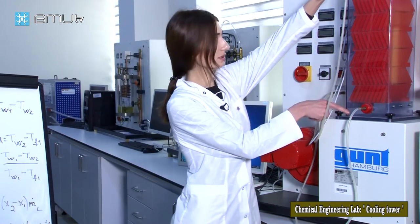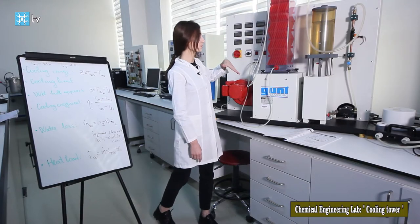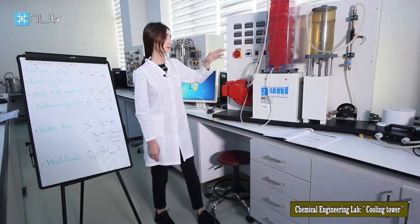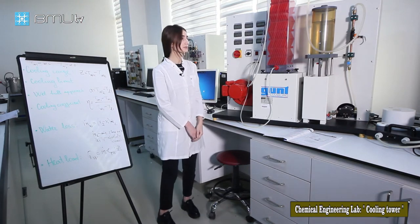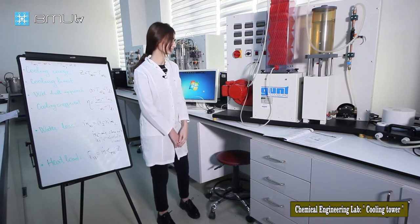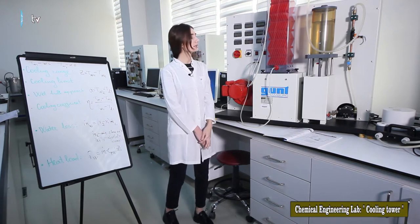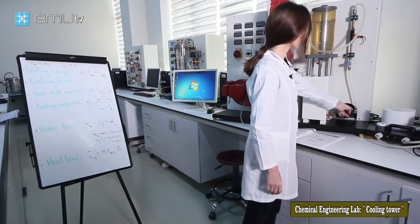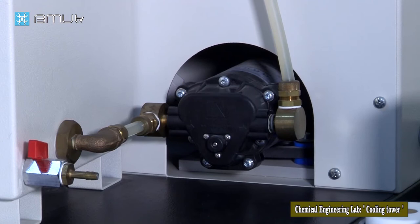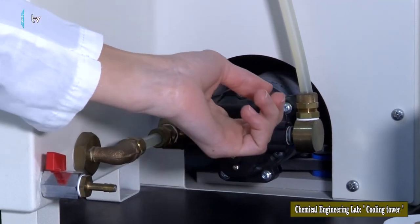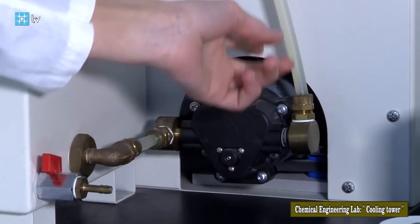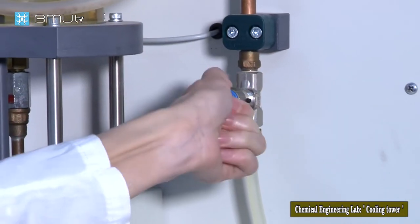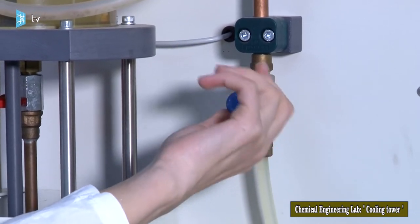The packing density is the ratio between the total surface area of all the slats and the volume of the cooling column. Next, let's talk about the pump. The water to be cooled is pumped through the circuit by a centrifugal pump, and the flow rate of water can be regulated by a regulator valve. We can increase or decrease the volumetric flow rate of water by adjusting this knob.